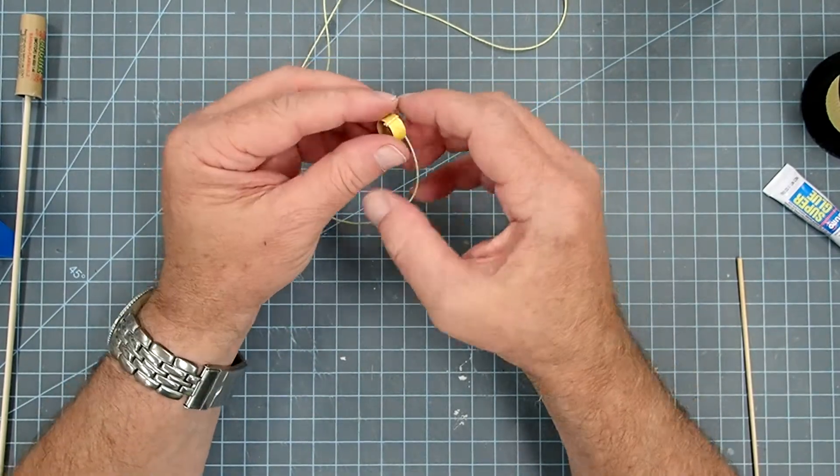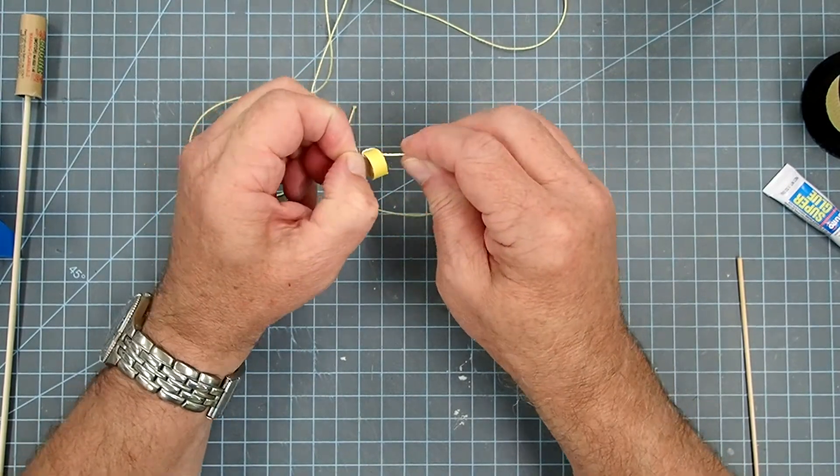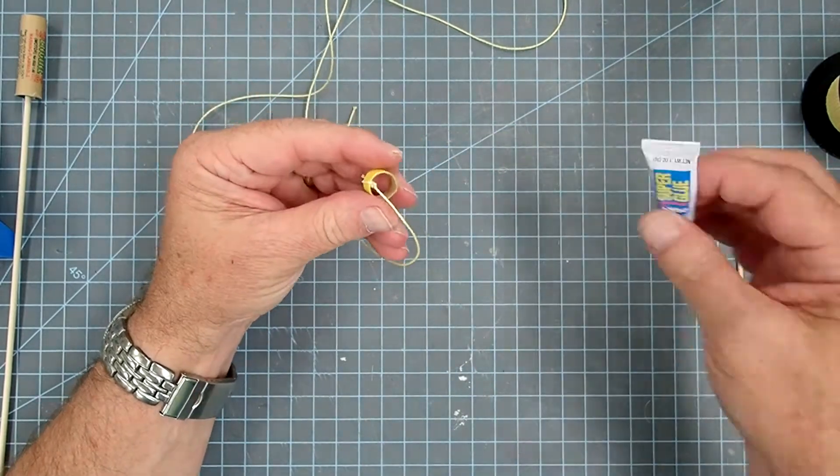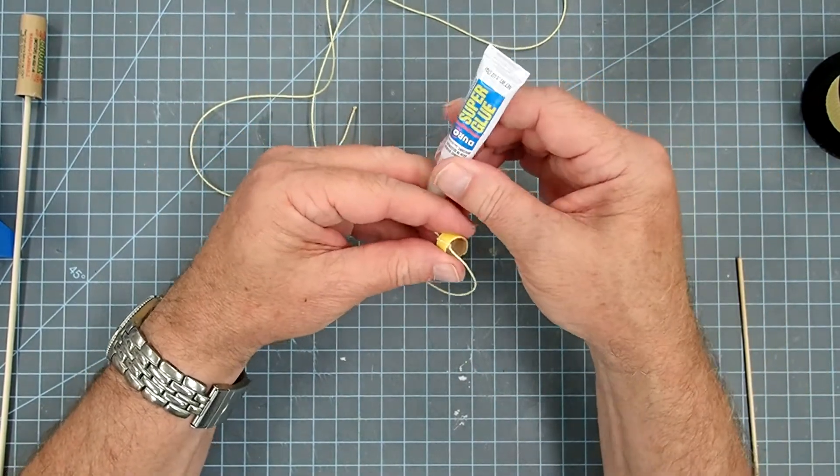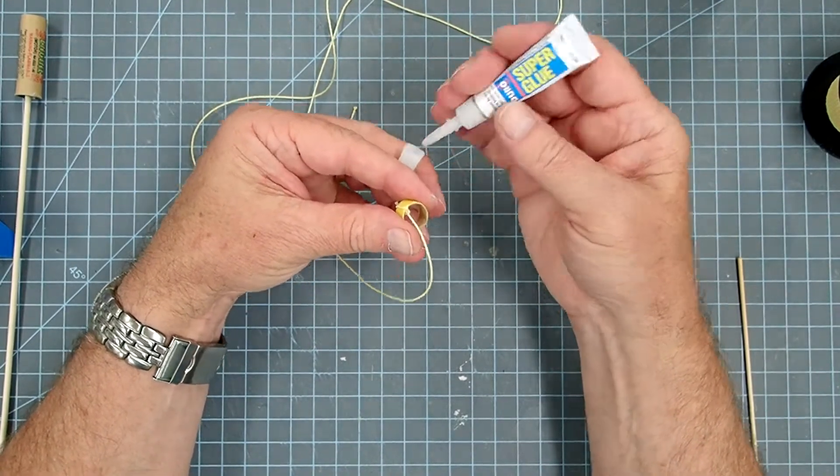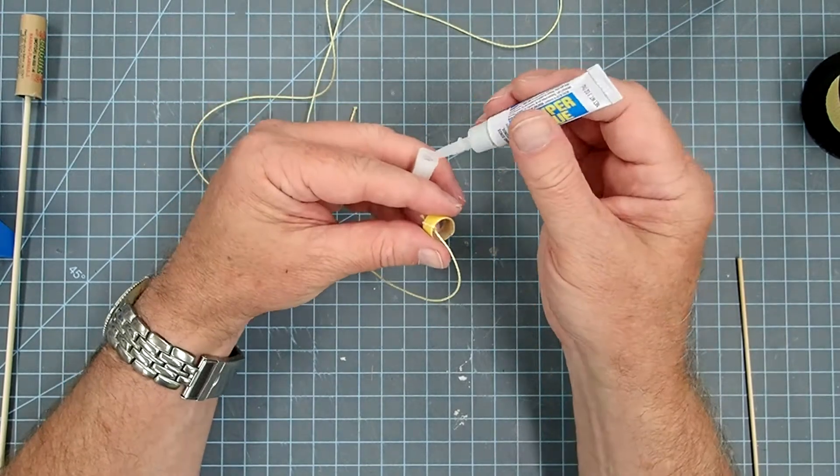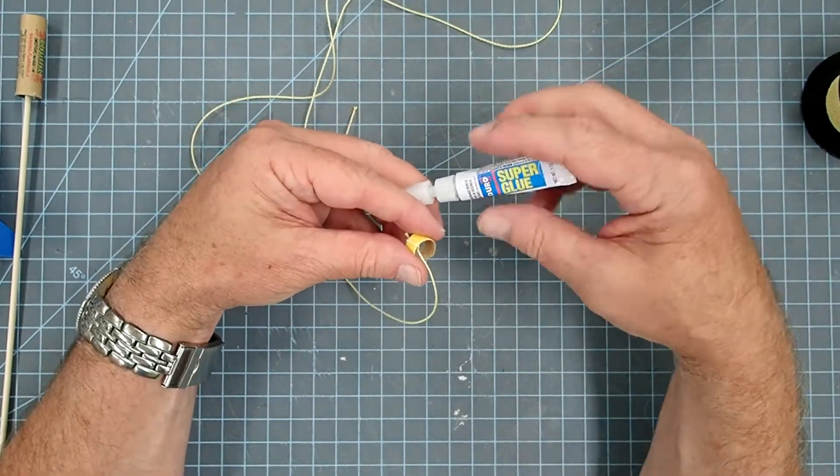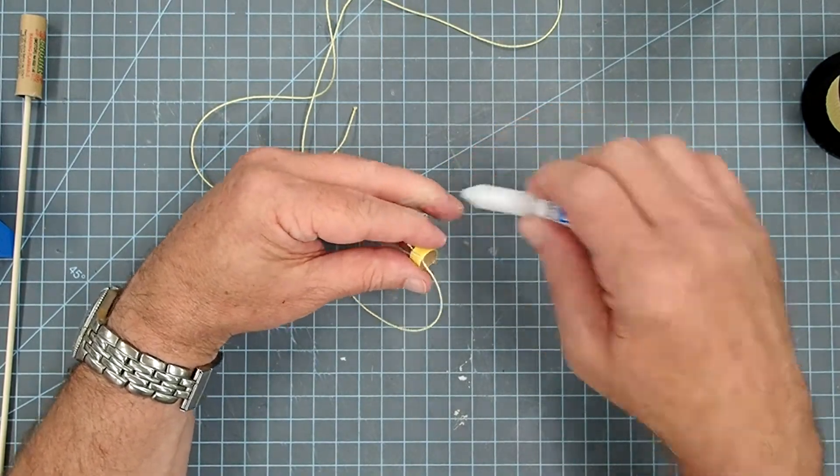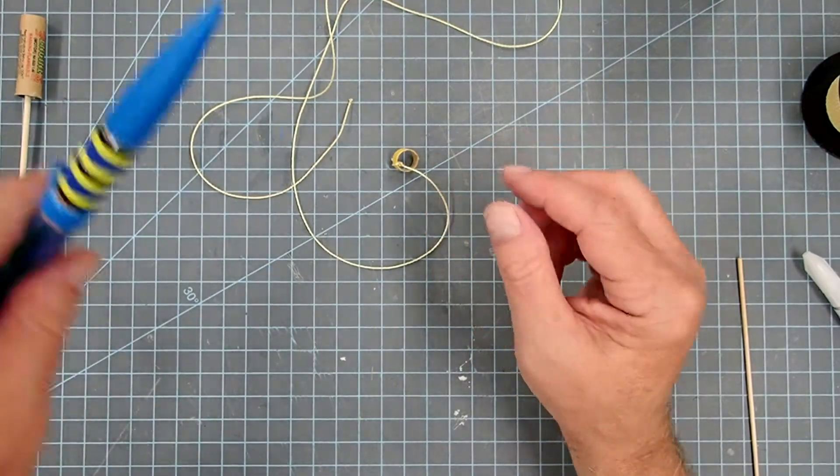Now you notice it's already trying to come undone and Kevlar does that. Tighten that down again once you've got it in position. And then here again we can use a little bit of superglue. Use that to lock that knot into place. We'll let that dry for a few minutes.